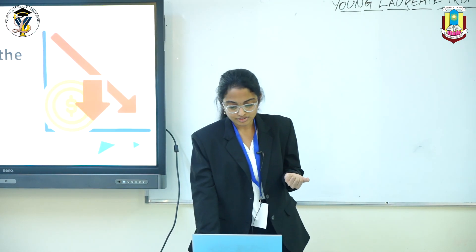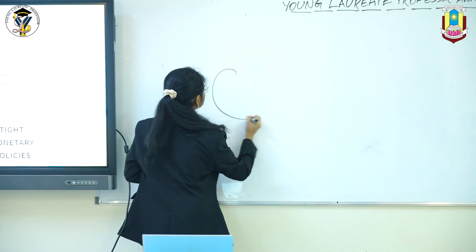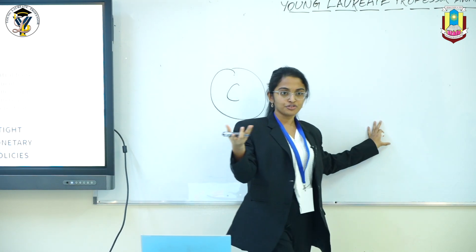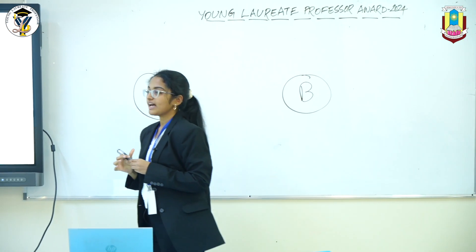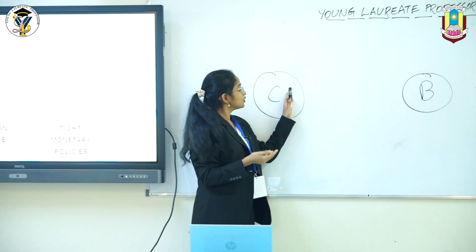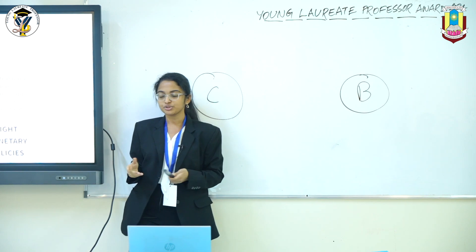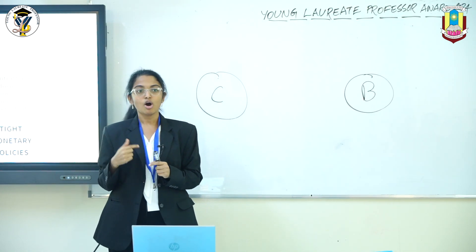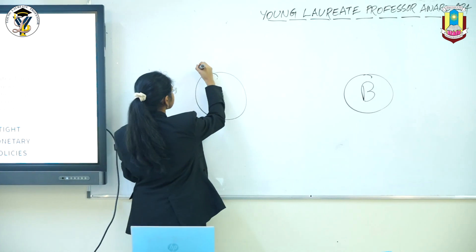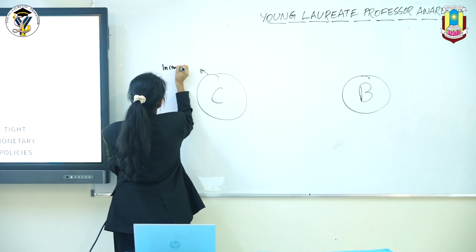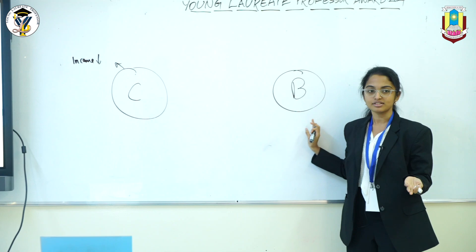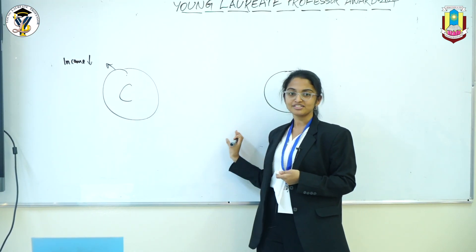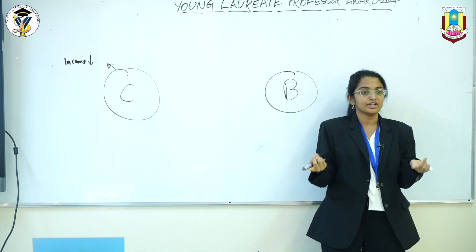So how do prices fall? Let's understand this by taking the consumers as C and the businesses or firms as B. The first cause is a decrease in aggregate demand, which means consumers are not spending as much in the economy. This could be because they're uncertain about the future or their income levels have decreased. When consumers' income decreases, businesses have fewer customers, and in order to get more customers, they decrease prices. This is one way deflation happens.